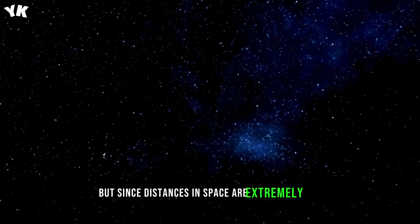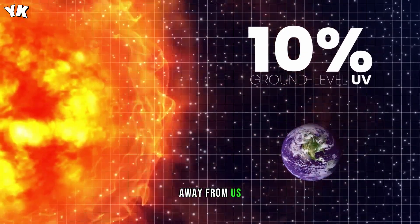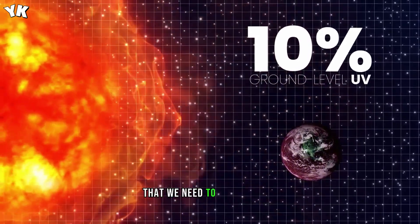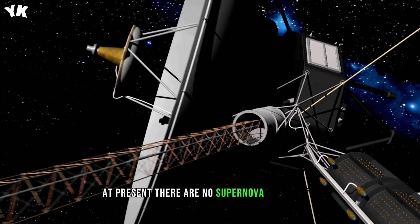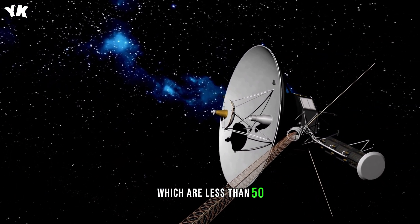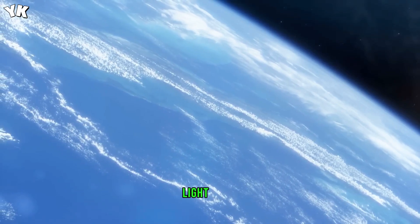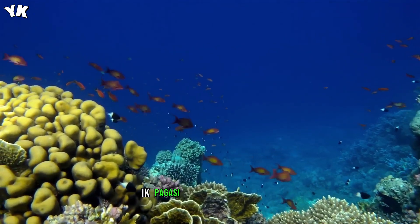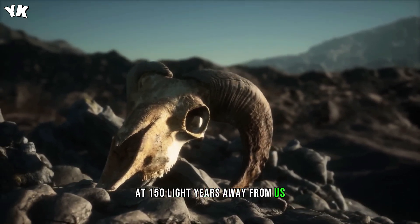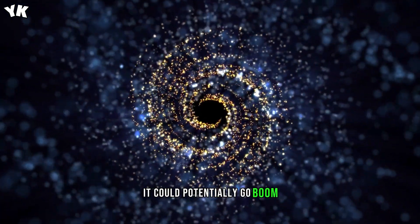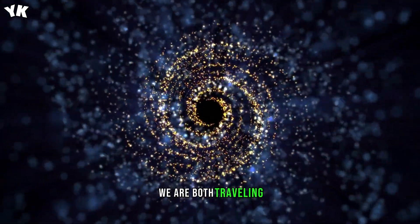But since distances in space are extremely vast and most giant stars are millions if not billions of light-years away from us, there are not that many stars that we need to worry about that might die anytime soon. At present, there are no supernova candidates close to our solar system which are less than 50 light-years away, and only six near-Earth supernova candidates within 1,000 light-years. IK Pegasi, which is the closest candidate giant star at 150 light-years away from us, is estimated that by the time it could potentially go boom, our solar system will be at a safe distance due to the relative trajectories we are both traveling across space.